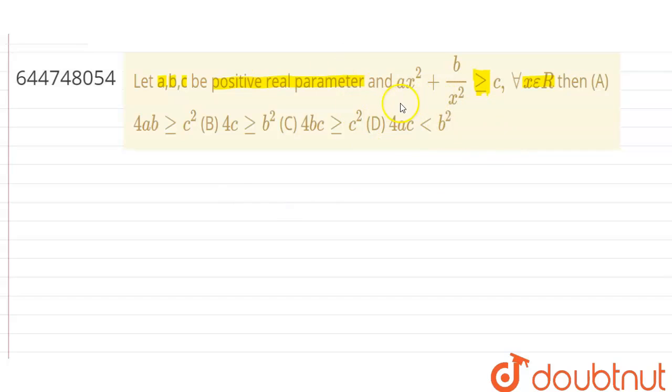So for doing the question we are going to apply AM, GM and HM method. Also we know that AM is always greater than GM and it is always greater than HM. Here AM means arithmetic mean, GM means geometric mean and HM means harmonic mean.